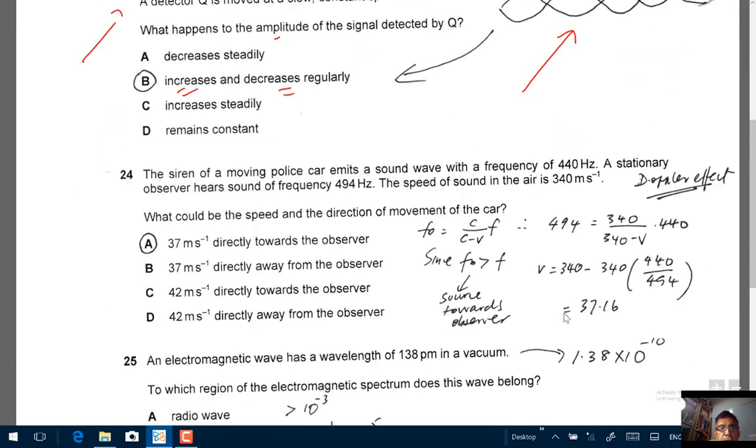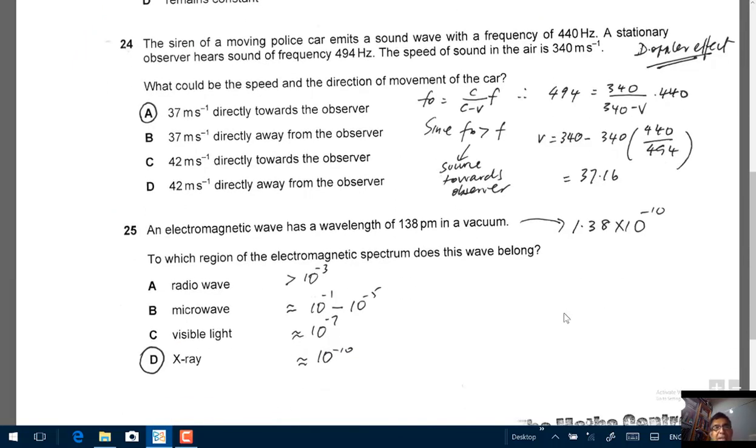Now let's look at 24. The siren of a moving police car emits a sound wave with a frequency of 440 hertz. A stationary observer hears sound of frequency 494 hertz. Those are important numbers. The speed of sound in air is 340 meter per second. Our question: what could be the speed and the direction of movement of the car? Question 24 deals with the Doppler effect.